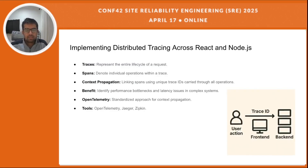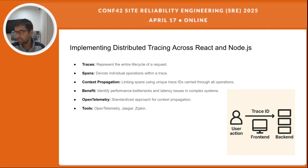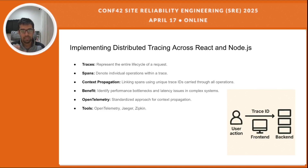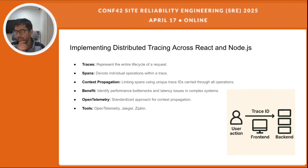As we discussed, distributed tracing is a powerful technique for understanding how requests flow through the application. It involves breaking down each request into a series of operations called spans, and a series of spans forms a trace. The key here is context propagation — ensuring that each span, whether on the front end or the backend, is linked together using the unique trace ID. This allows us to visualize the entire journey of a request and pinpoint exactly where any slowdowns or errors are happening. OpenTelemetry provides a standard approach for implementing this, and tools like Jaeger and Zipkin allow us to visualize these traces.